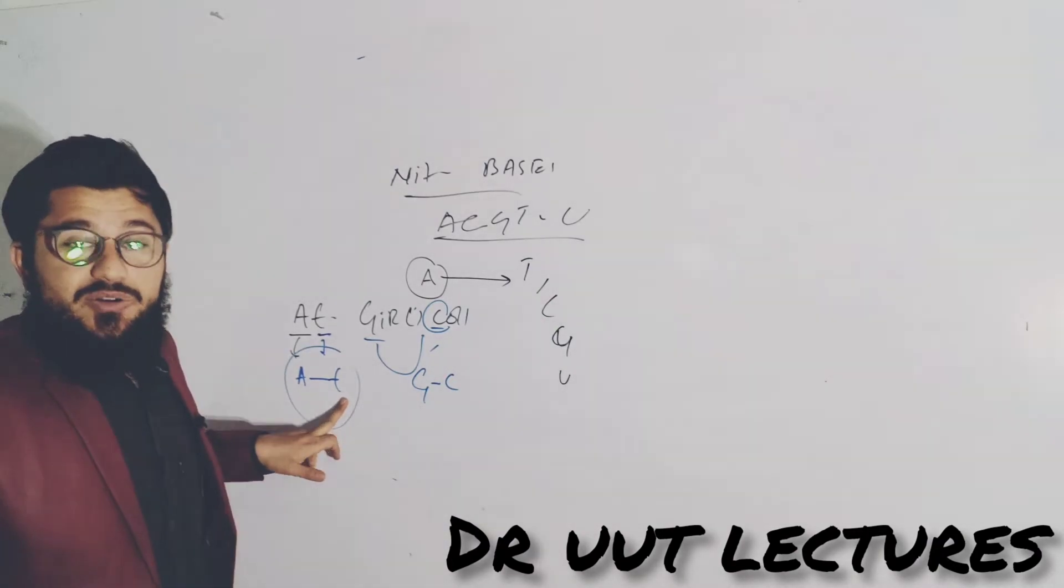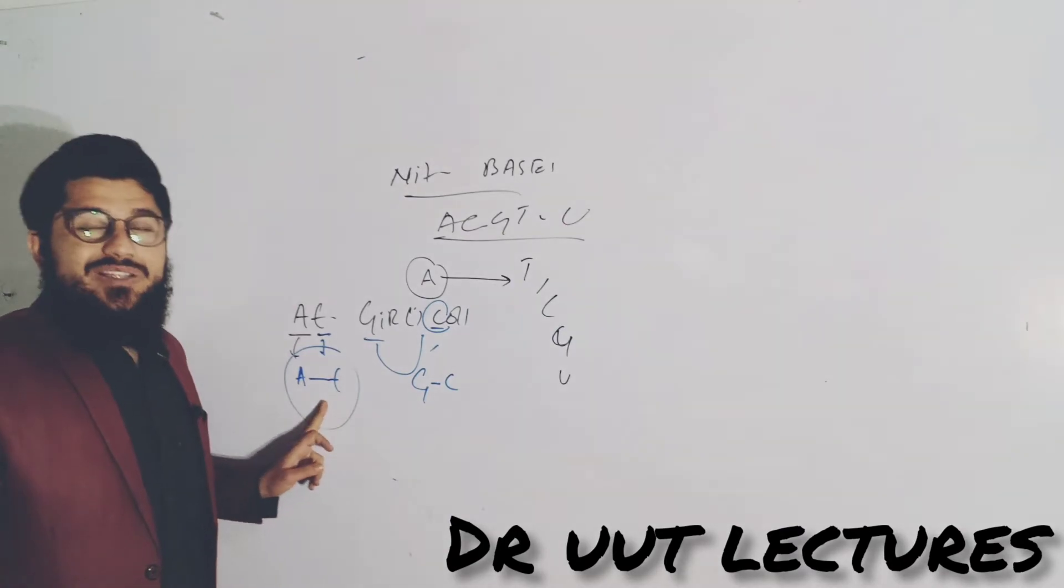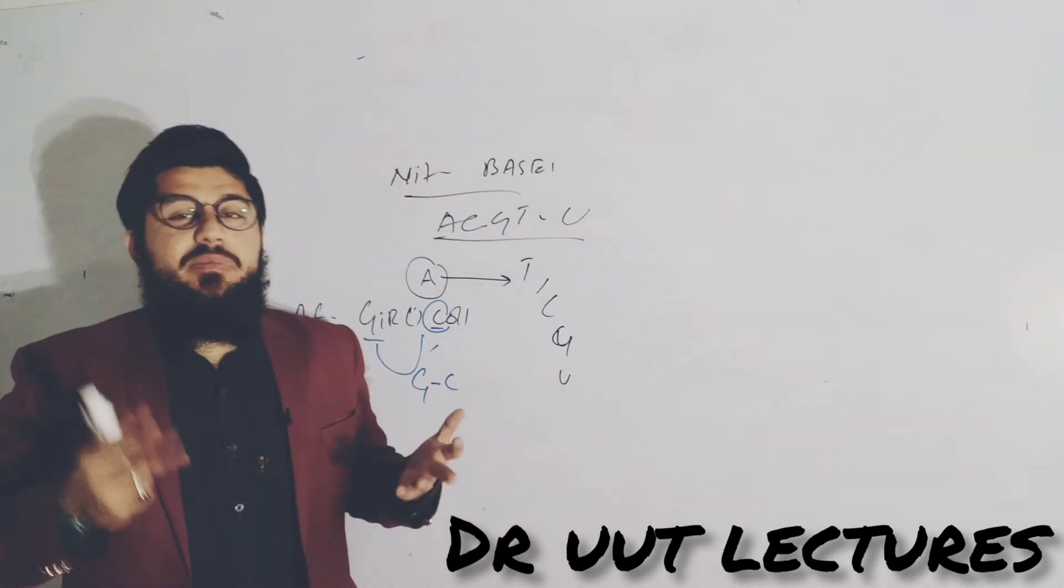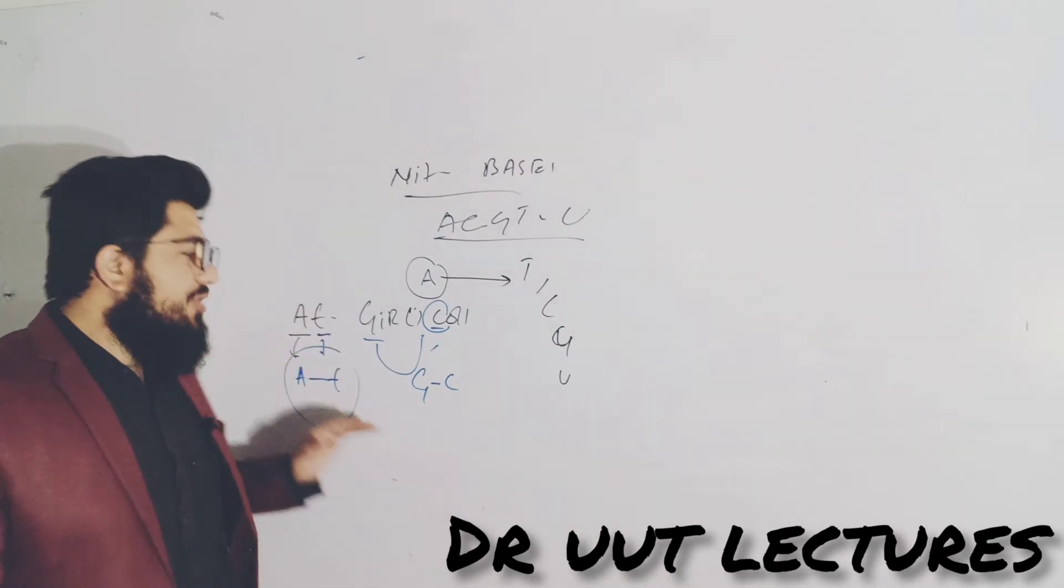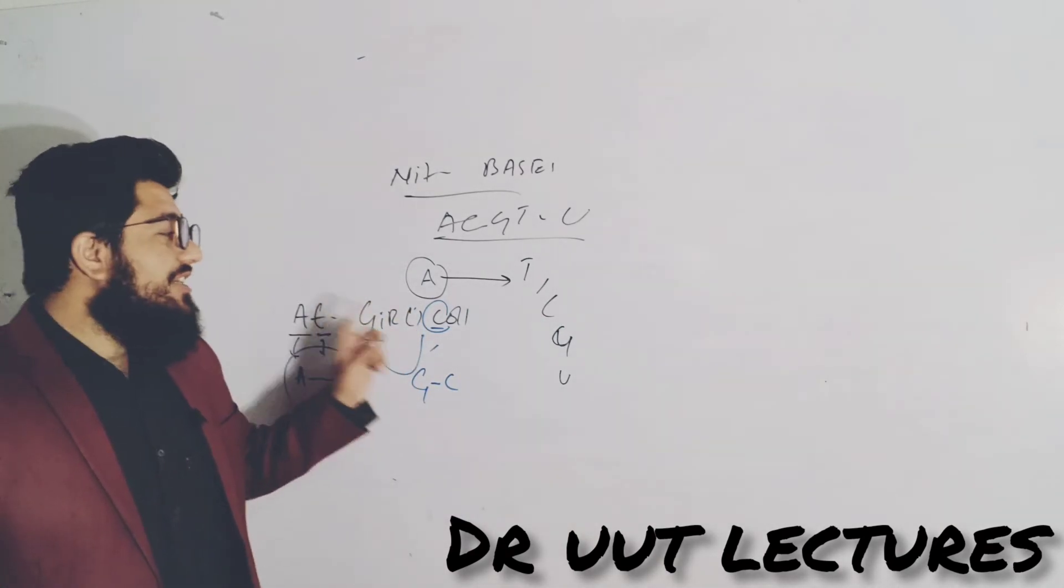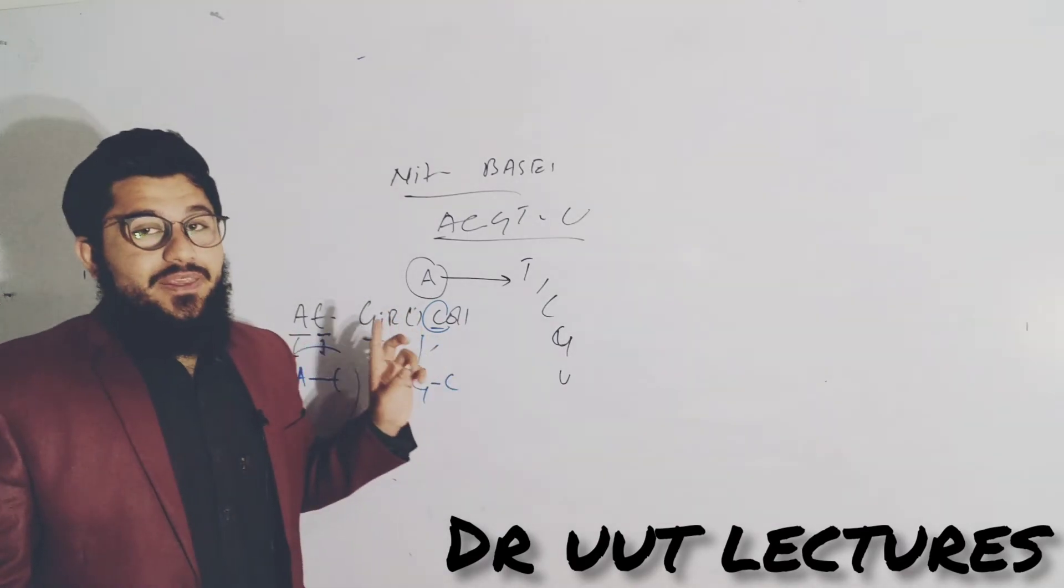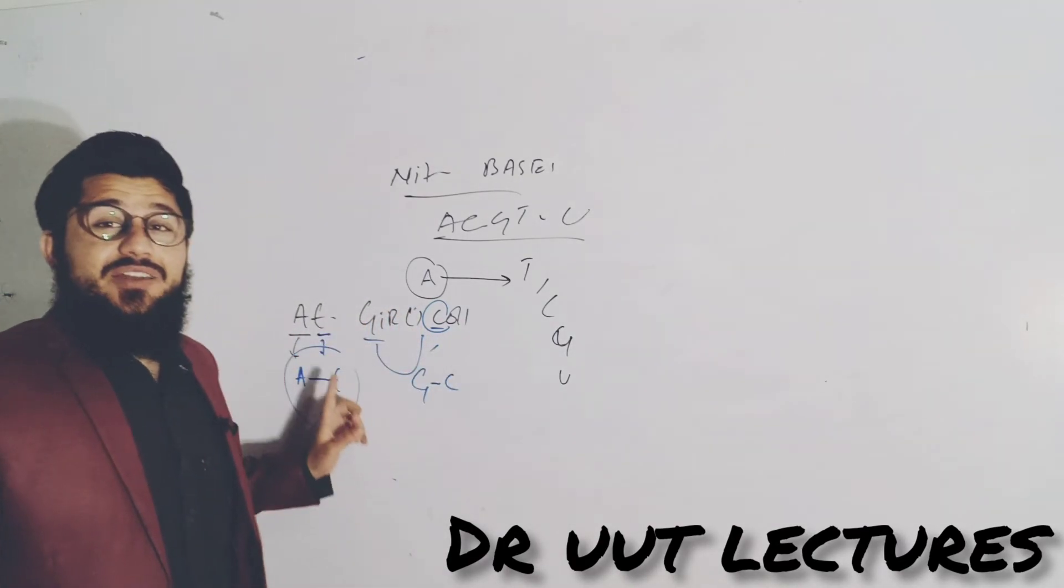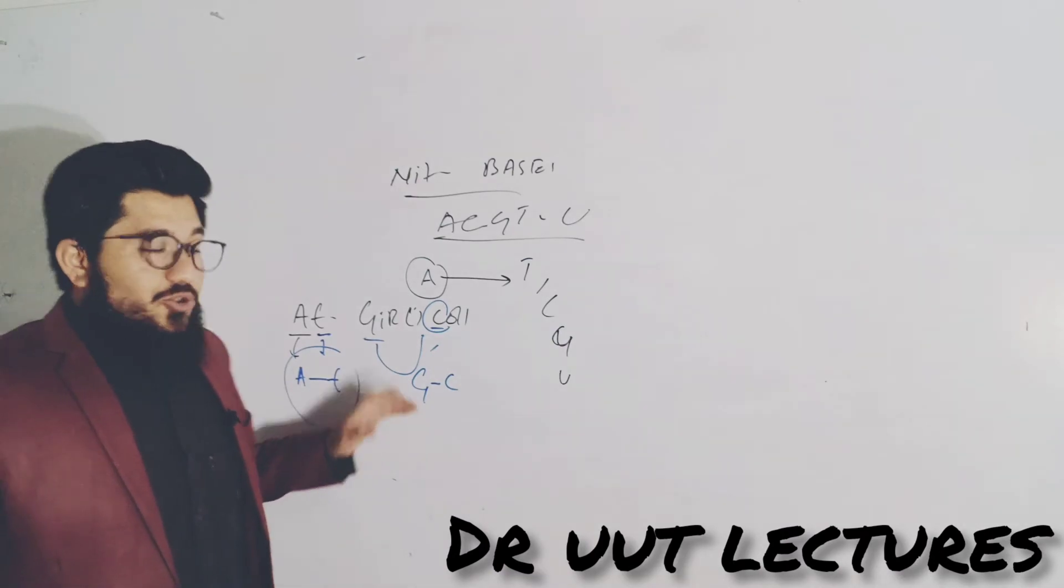Why? Because I told you the trick. This is going to work in any case. If you are asked about the adenine or the thymine, you will always say A is always with thymine, thymine always with adenine. Why? Because you got the sentence: At Girls College. A is always with thymine, G is always with cytosine, cytosine with guanine, adenine with thymine, thymine with adenine.